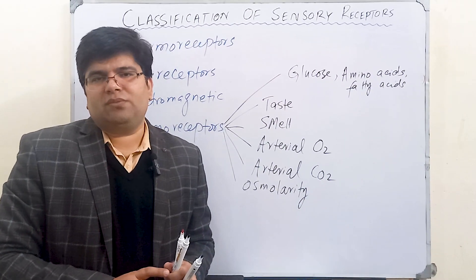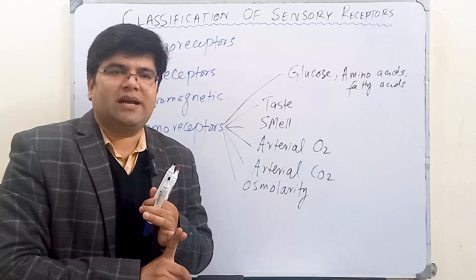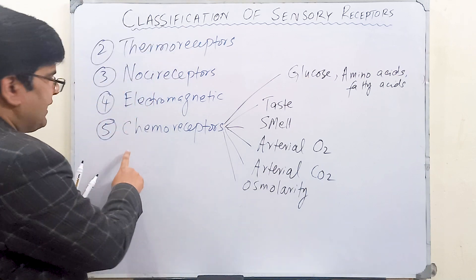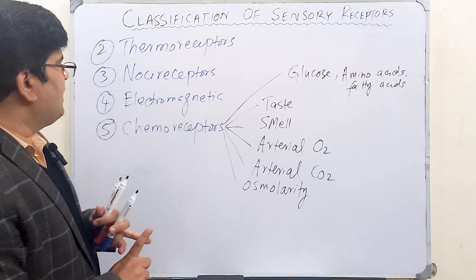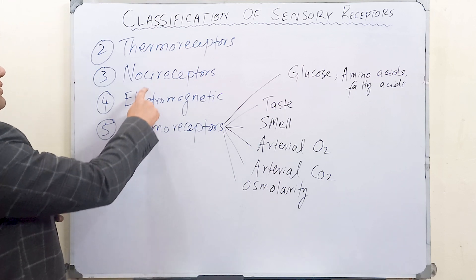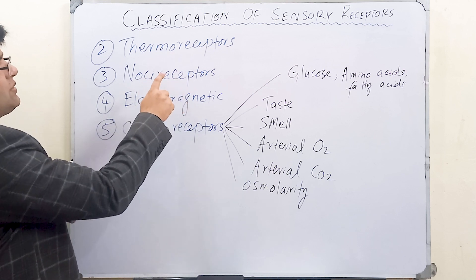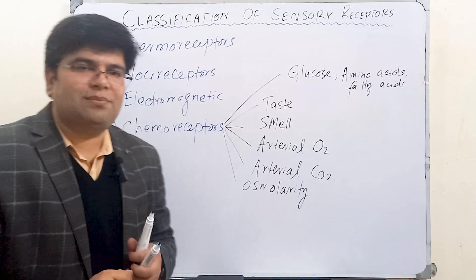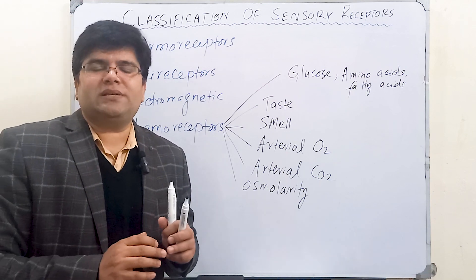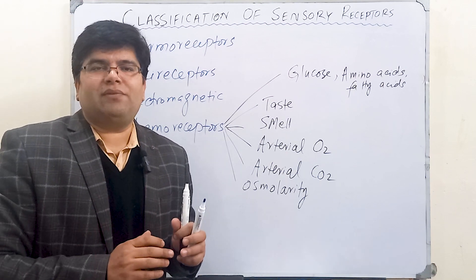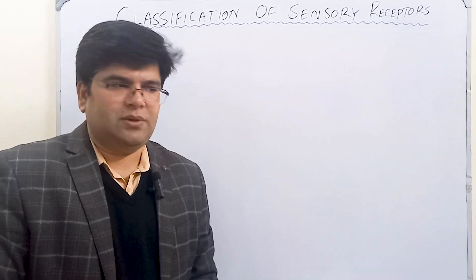So we have classified sensory receptors on the basis of nature of stimulus into five categories: mechanoreceptors, which is the largest category; chemoreceptors, the second largest; electromagnetic receptors; nociceptors; and thermoreceptors. This is one way to classify receptors. There are other ways as well.